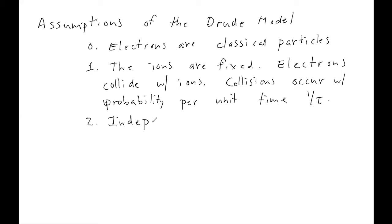On average, each electron travels a time tau before its next collision. If I pick one electron at random from the entire collection of electrons in a metal, it will have traveled a time on average tau since its last collision. We need to invoke this collision time tau, though the Drude model doesn't explain where tau comes from. The next assumption of the Drude model is that the electrons are independent — they do not interact with each other. Obviously they do since they're charged, but for now we assume they don't.